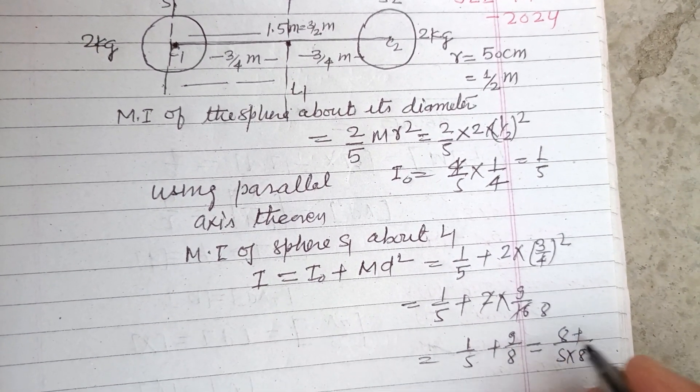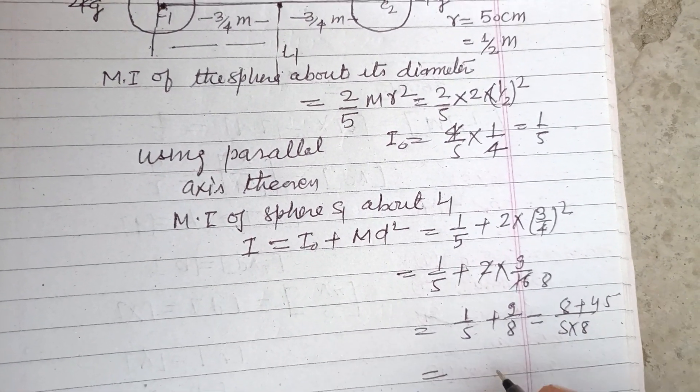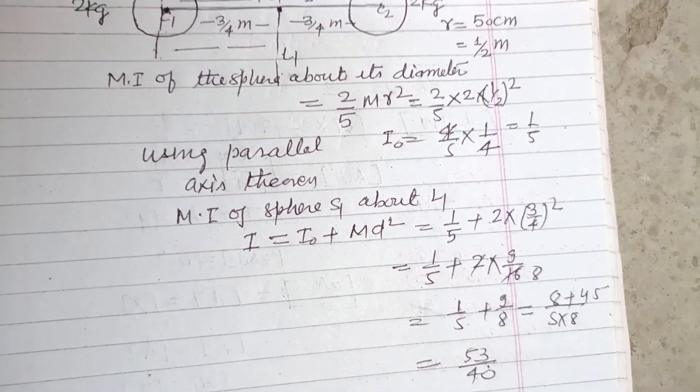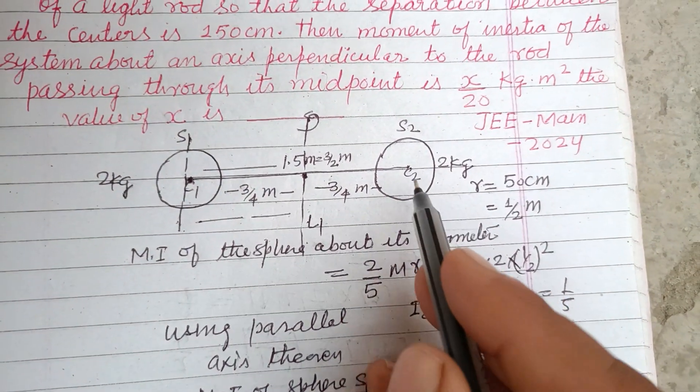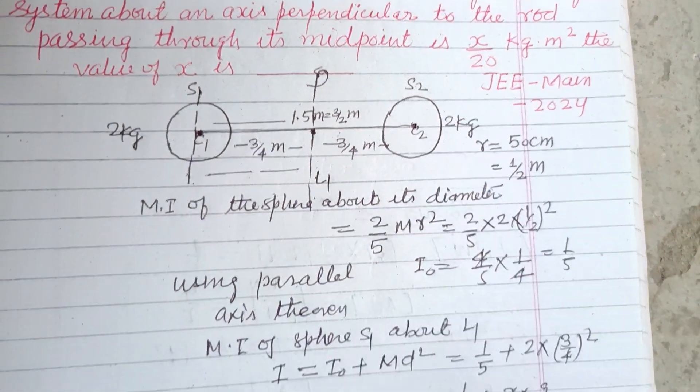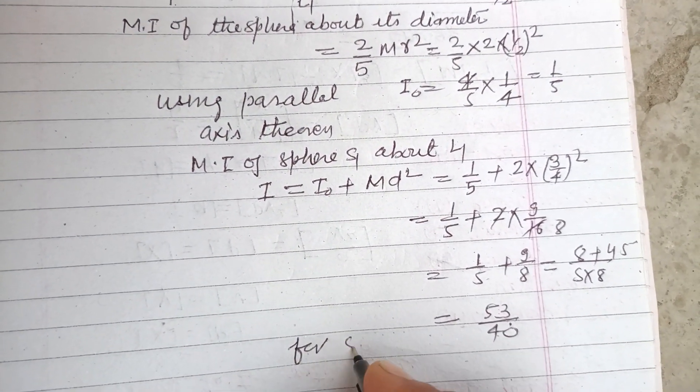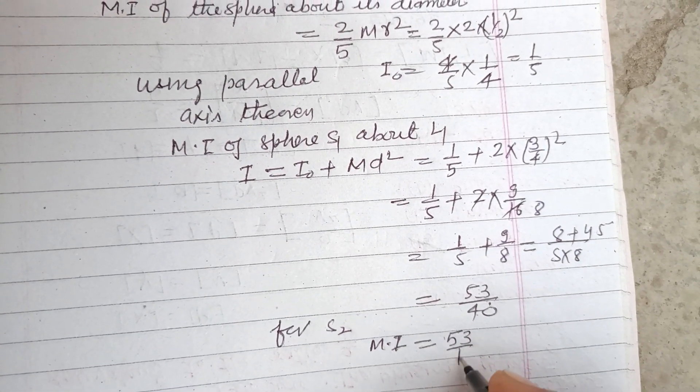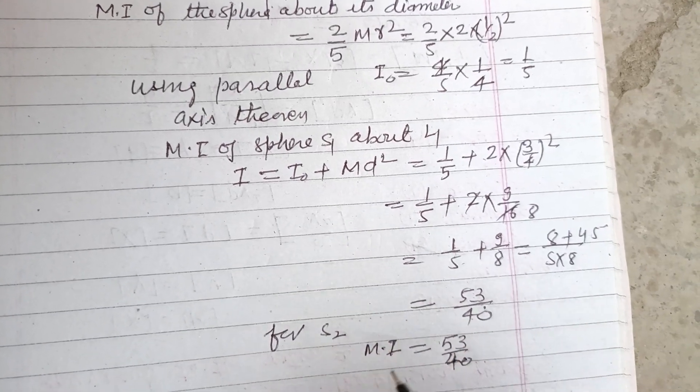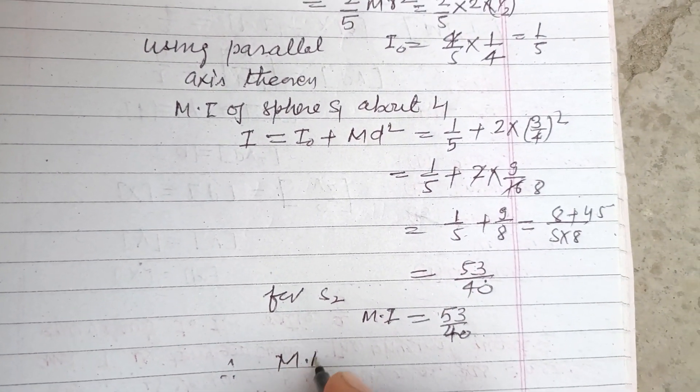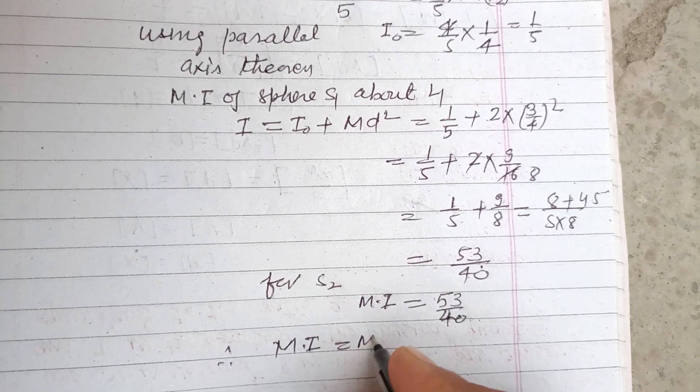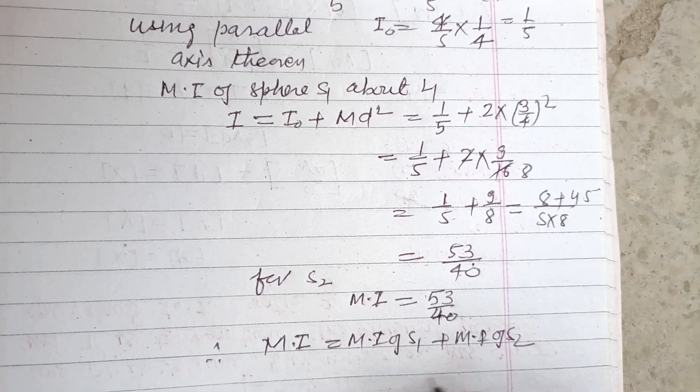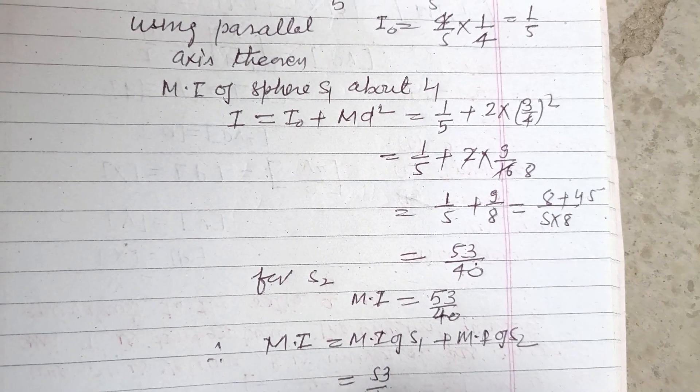So this is 5 × 8: 8 + 5 × 9 = 45, therefore 8 + 45 = 53/40. So here are two similar spheres, this is for S1, for S2 moment of inertia is also 53/40 because both are the same. Therefore total moment of inertia: moment of inertia of S1 plus moment of inertia of S2.